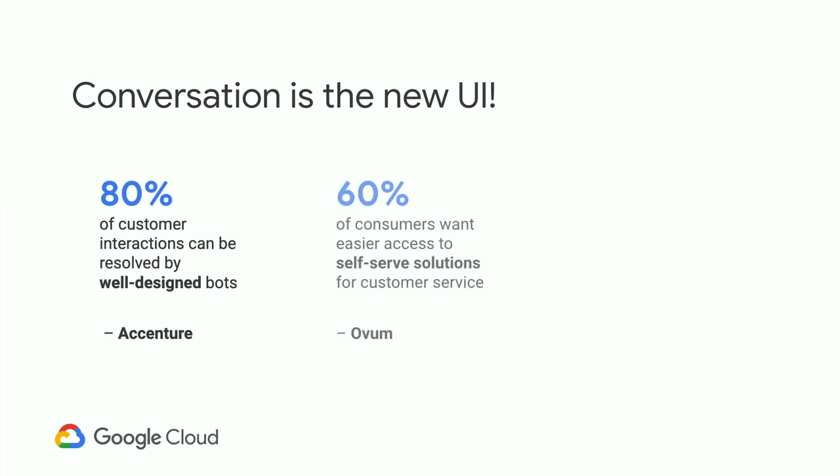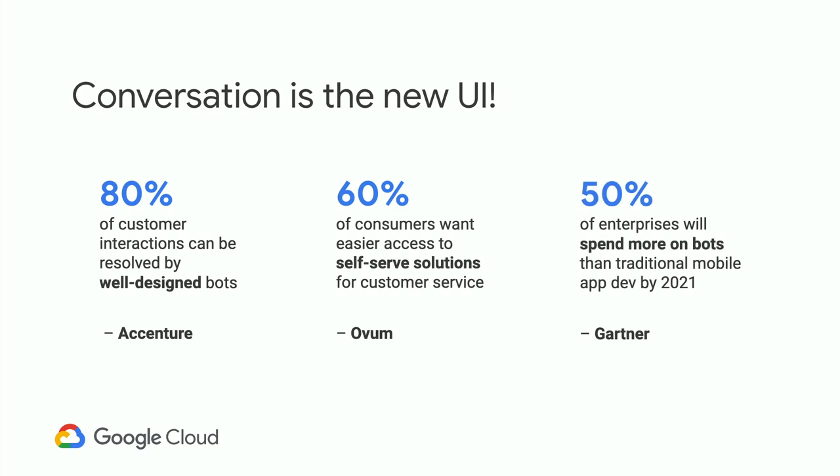There are studies that companies have done which prove that fact. 60% of customers want to use self-service as an option to get help — that's a pretty big number. When we say self-service, this is around customer service when we place that phone call to get help for a refund, return, or buying something new. 80% of customer interactions can actually be resolved through a well-designed bot. So it all boils down to how we use the conversational technology available today to get to that 80% number and design those well-designed bots.